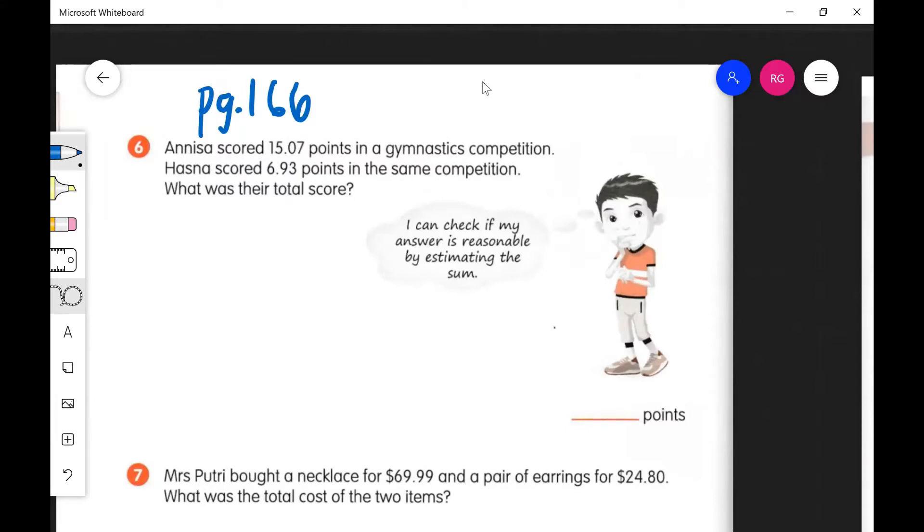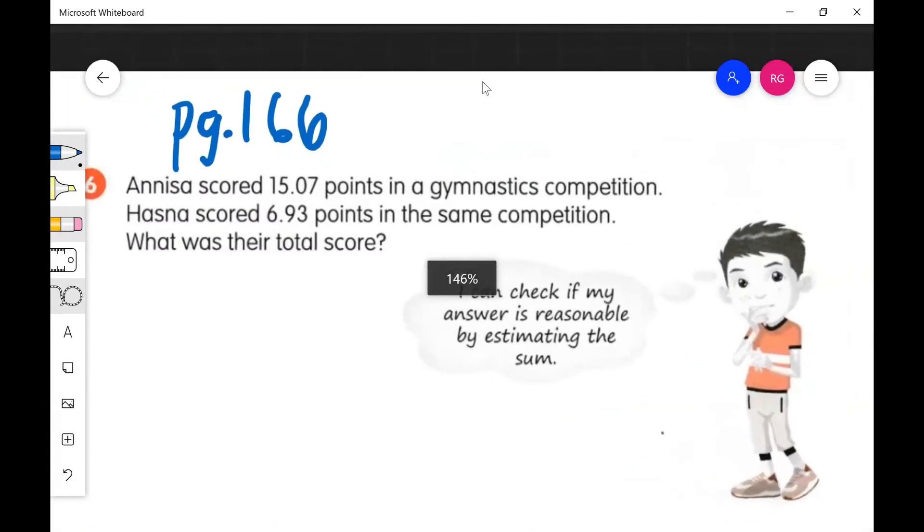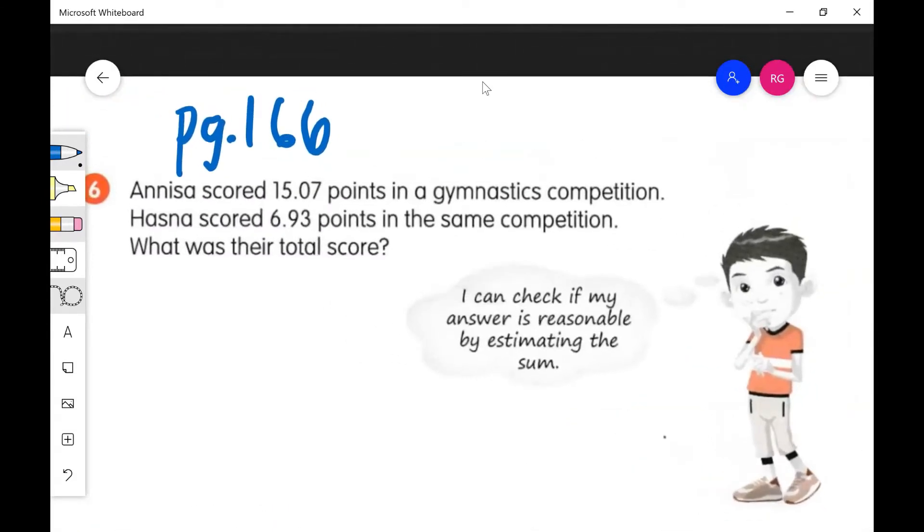Number 6: Anisa scored 15.07 points in a gymnastics competition. Hasna scored 6.93 points in the same competition. What was their total score? Okay, thank you very nice.